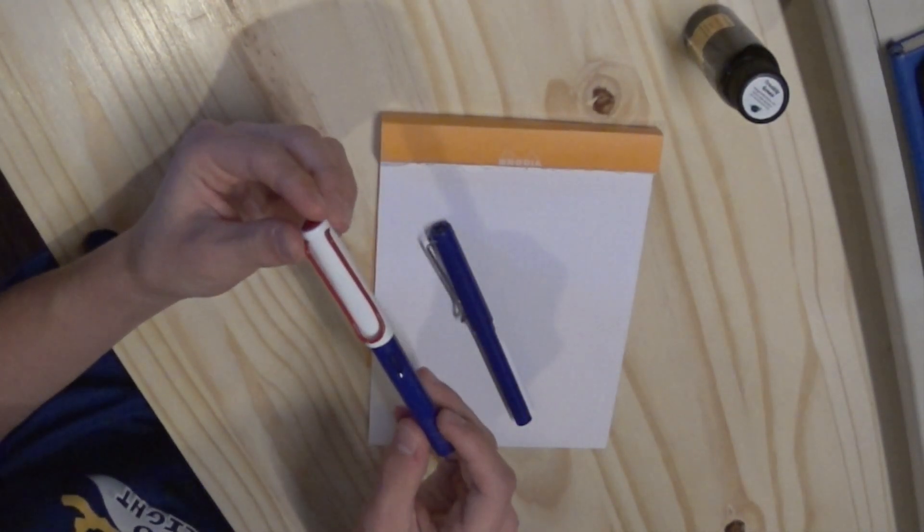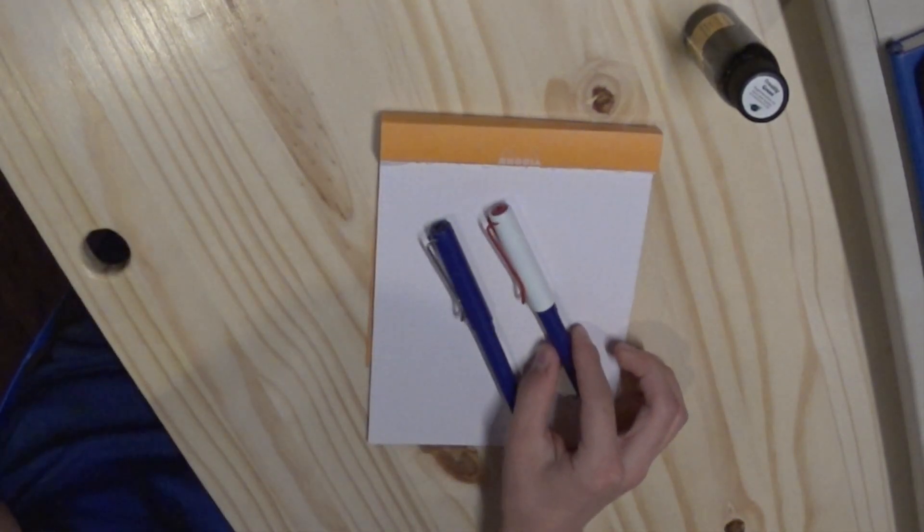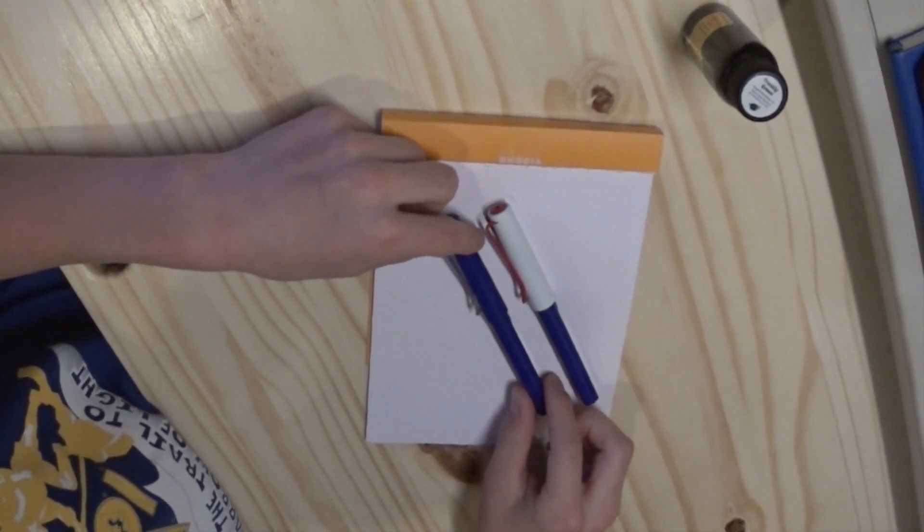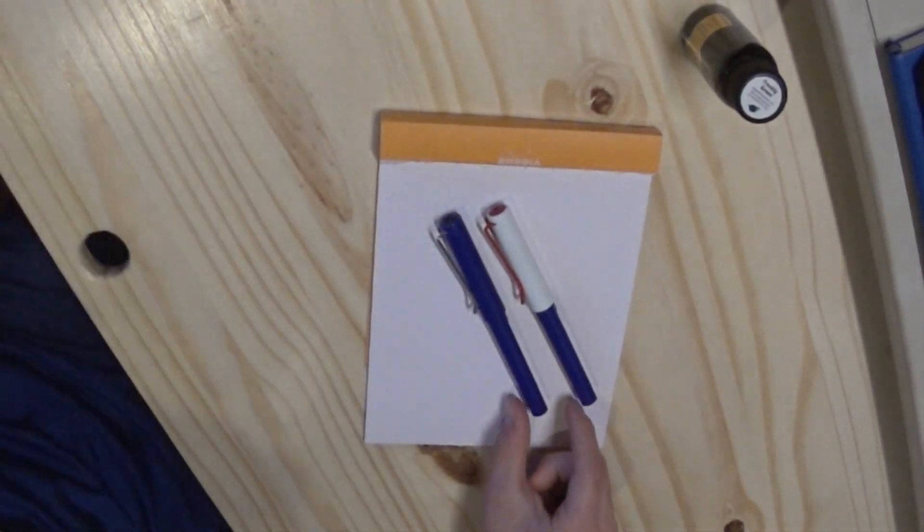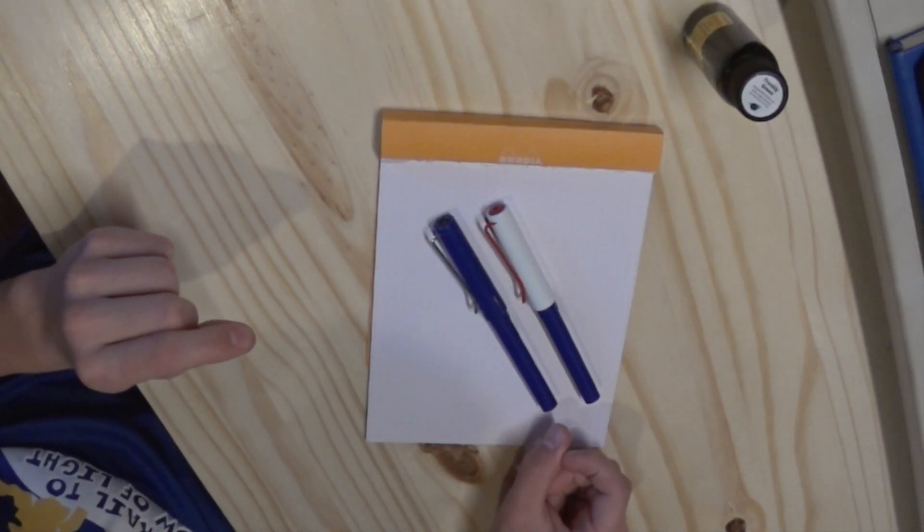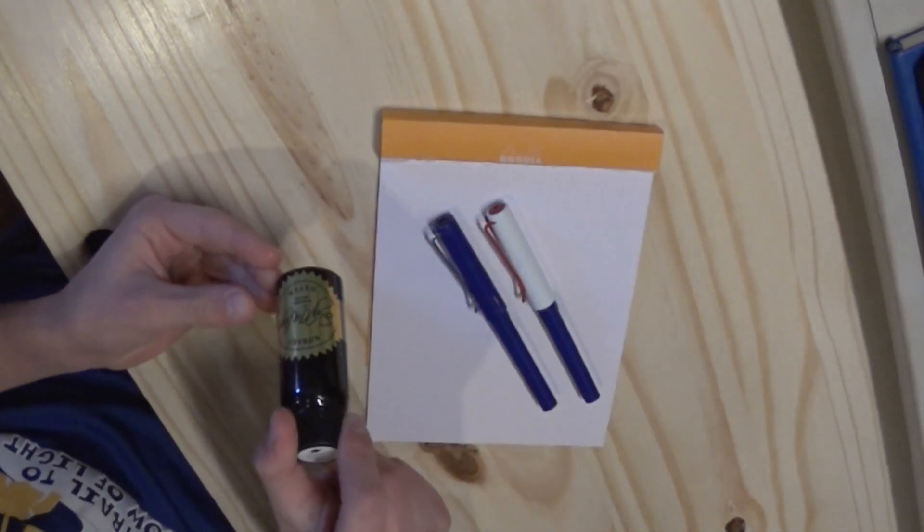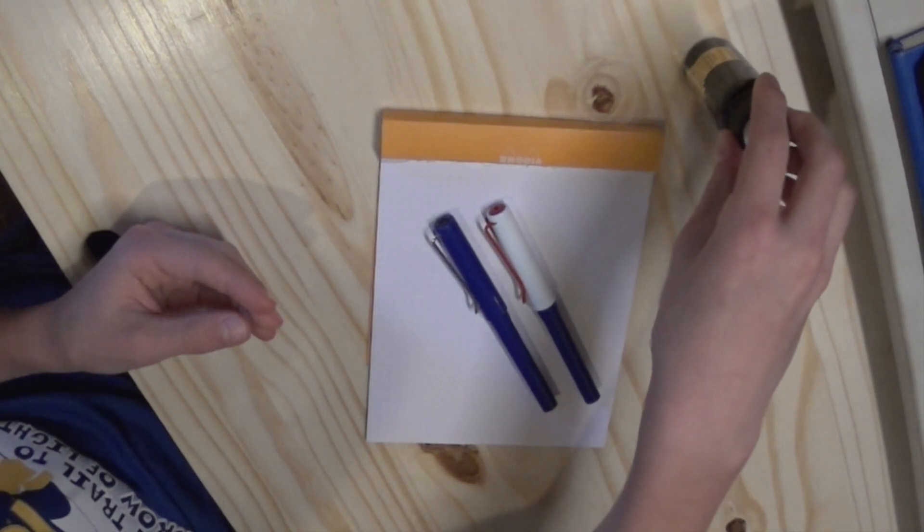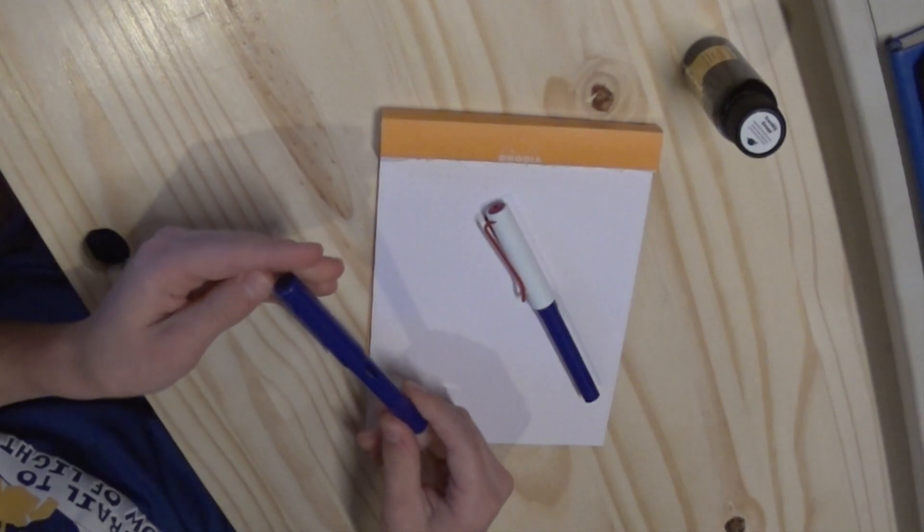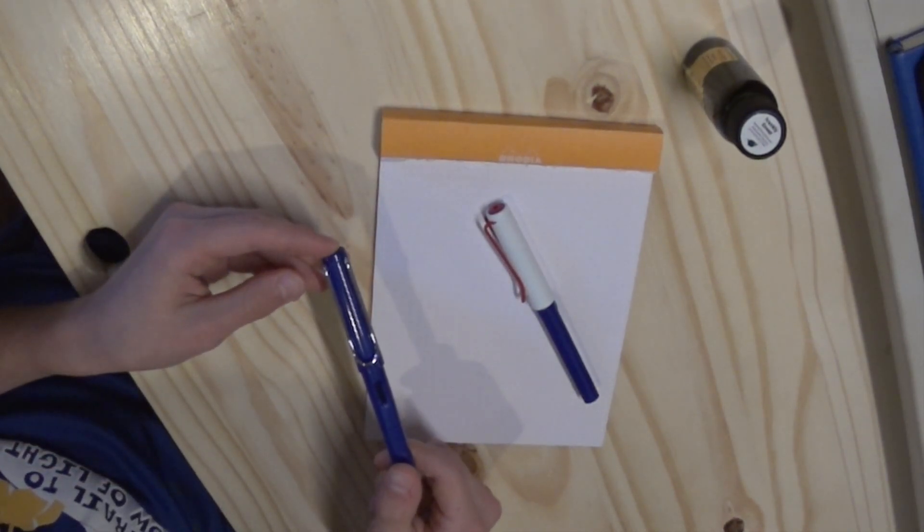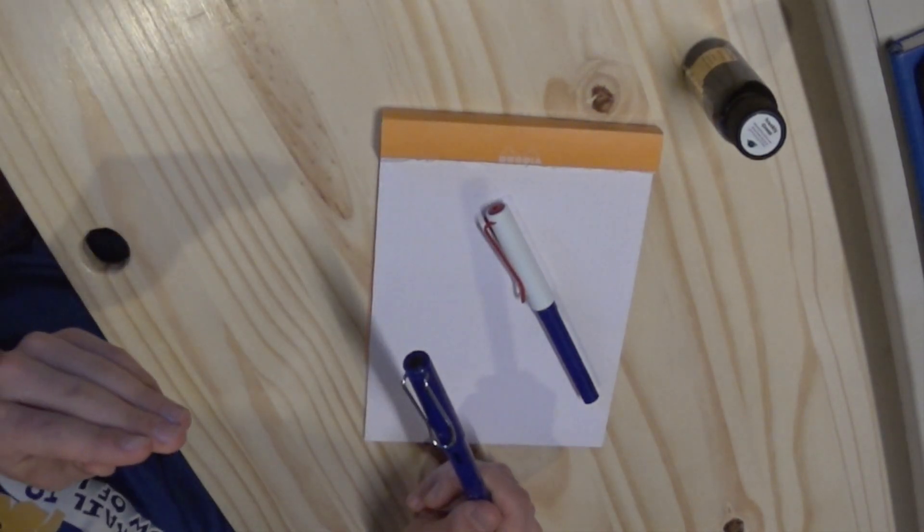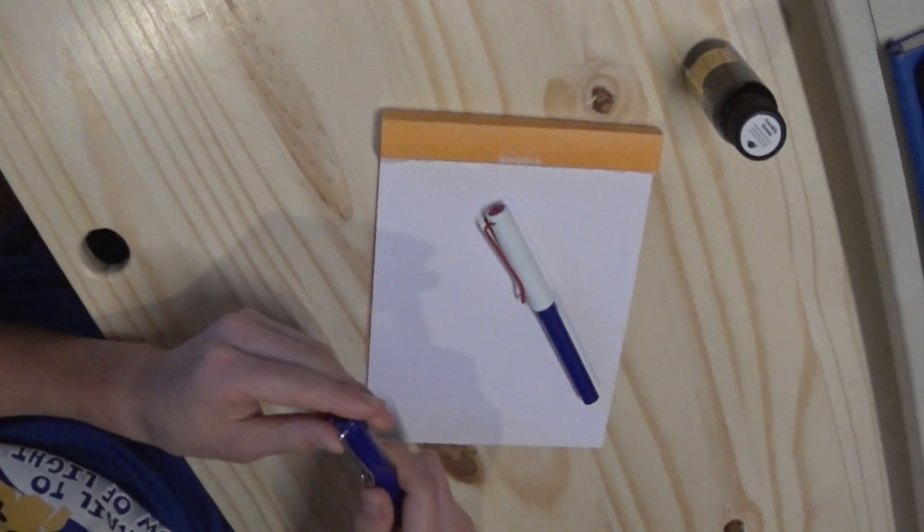So these have stainless steel nibs. They are converter fill or cartridge converter fill. Here's the bottle of Frank Green, and I really enjoy these. These are one of the best beginner pens, with a little bit higher than a Platinum Preppy. It's a little bit nicer.